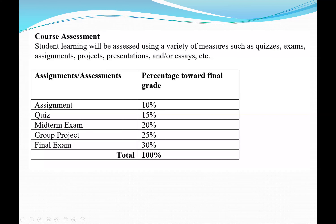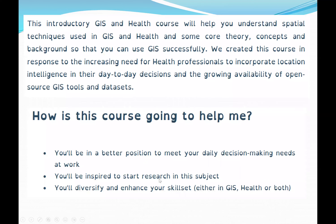For course assessment, we are going to have bi-weekly assignments worth 10% of the final grade, three quizzes worth 15%, one midterm exam worth 20%, one final exam worth 30%, and a group project worth 25% of the final grade. This is an introductory GIS course related to health.